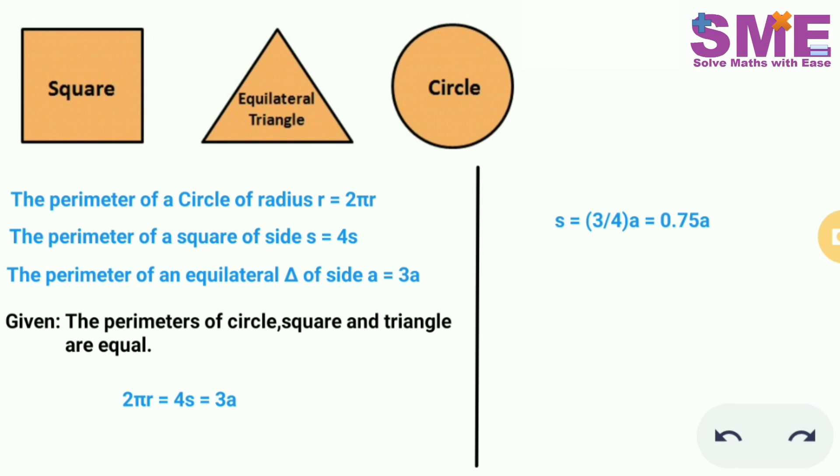So from this we get the value of s in terms of a as s equals 3/4a, which equals 0.75a. And similarly we will get the value of r in terms of a as 0.477a.